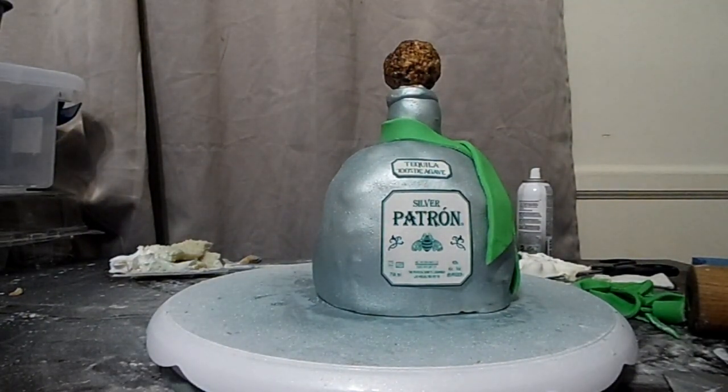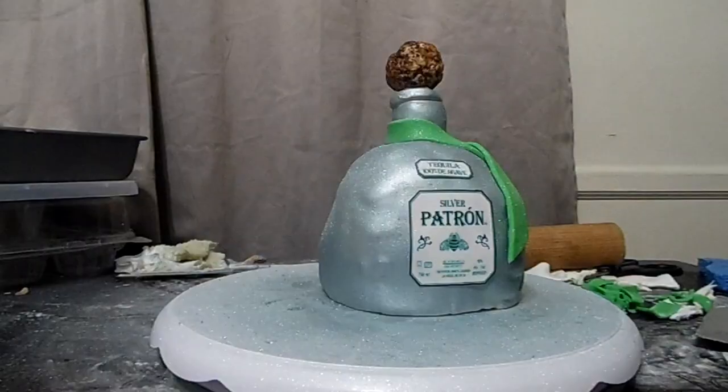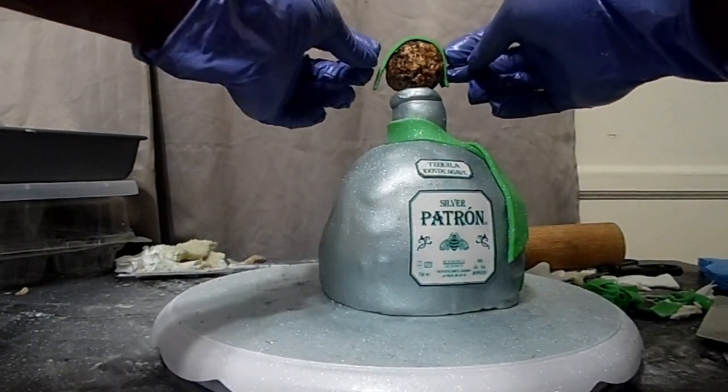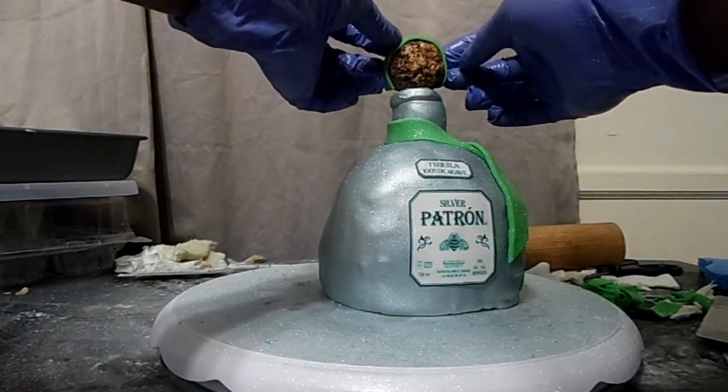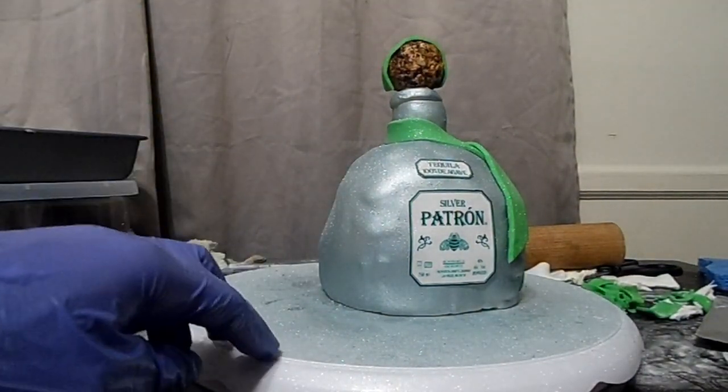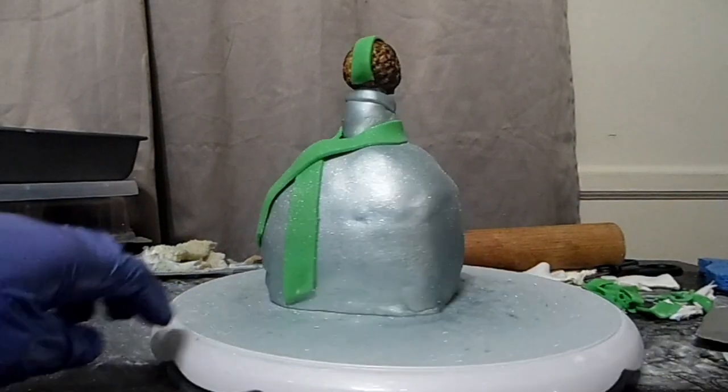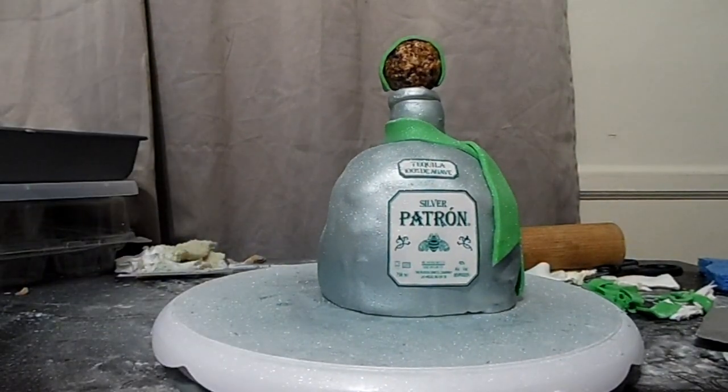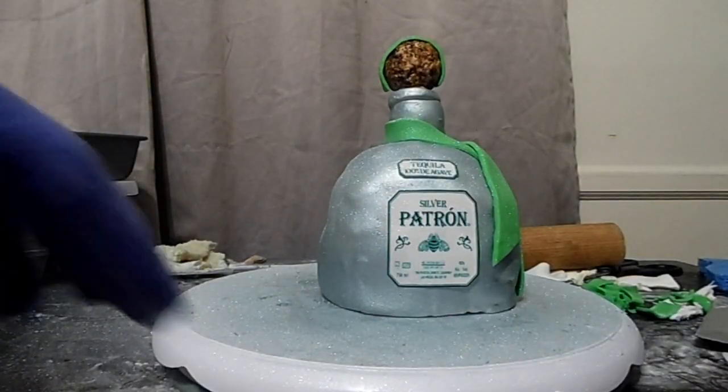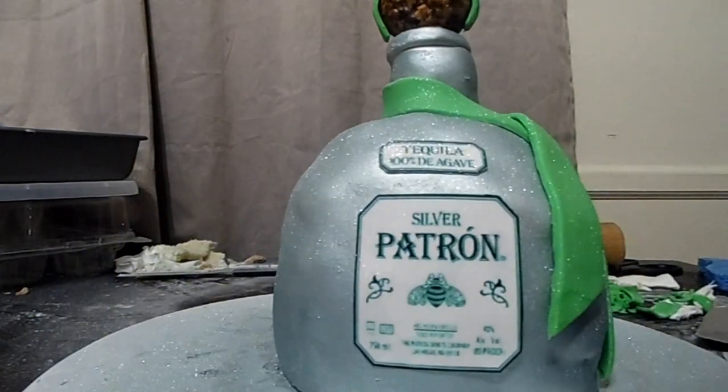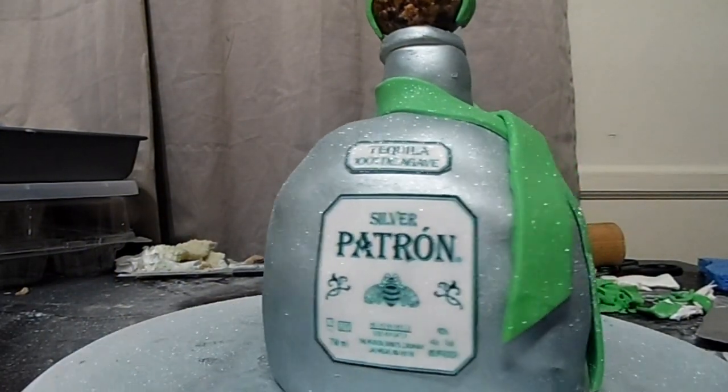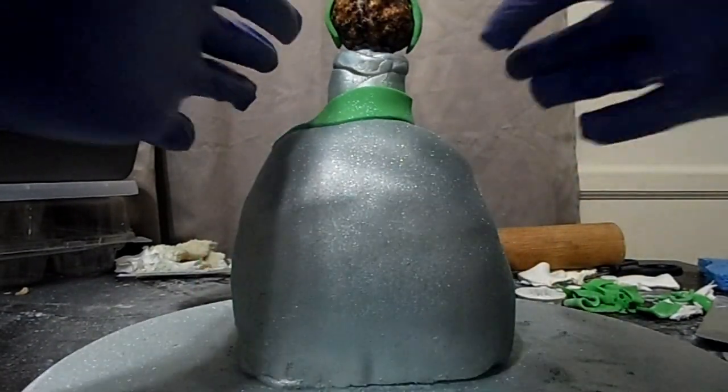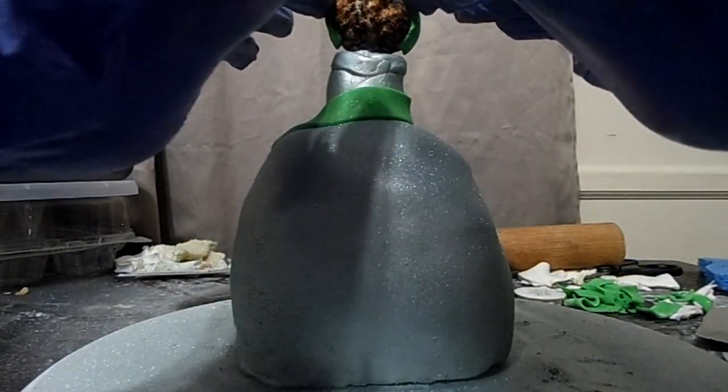So last but not least, we're going to put the seal on the top. If you've ever had any Patron, it has that green seal over the top. So that's going to act as the seal. And we're going to make it as realistic as possible. And then that's just some Wilton glitter, some Wilton edible glitter. I just sprayed that on there to give it that little shimmer that you see. I just gave it a few pumps and it gave it that nice little shimmer.